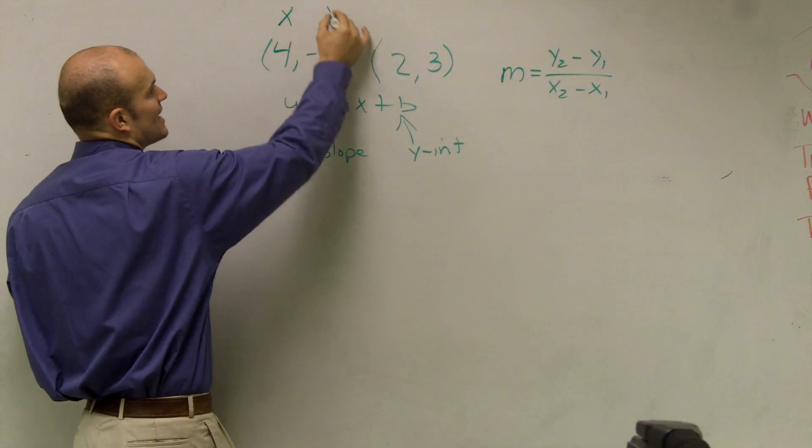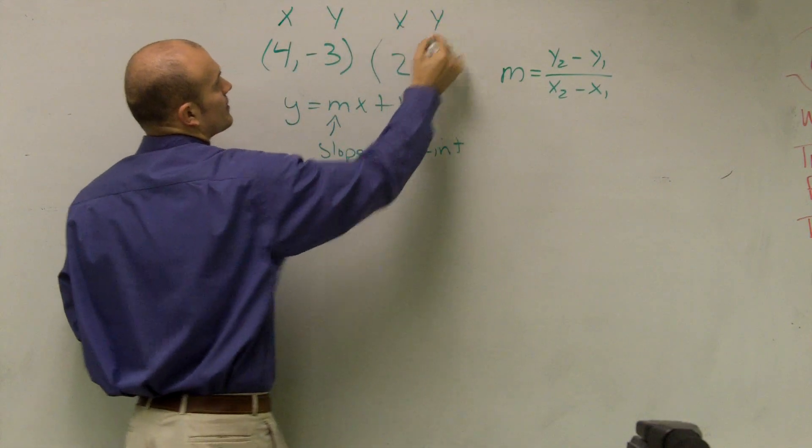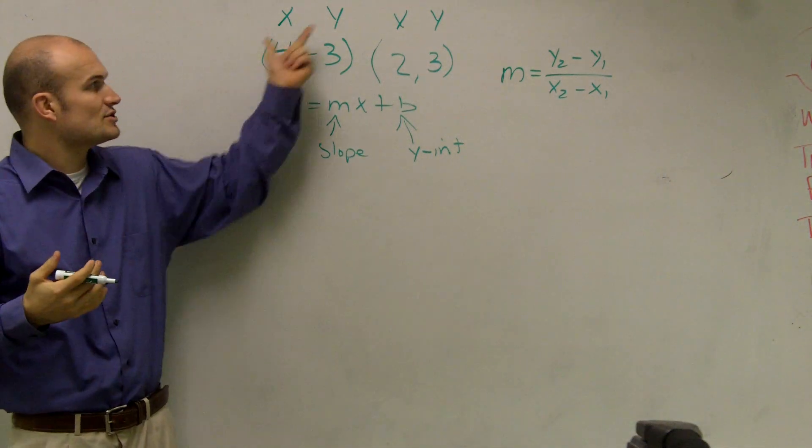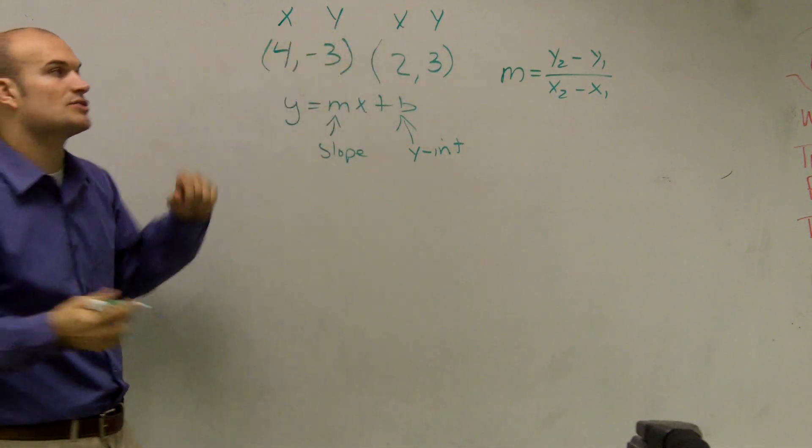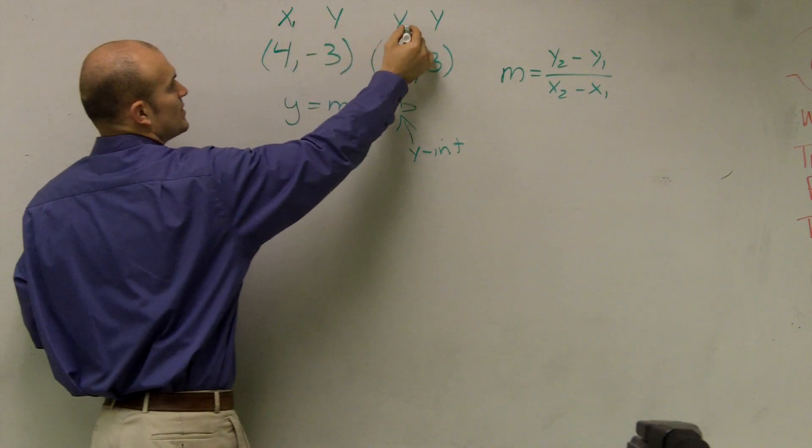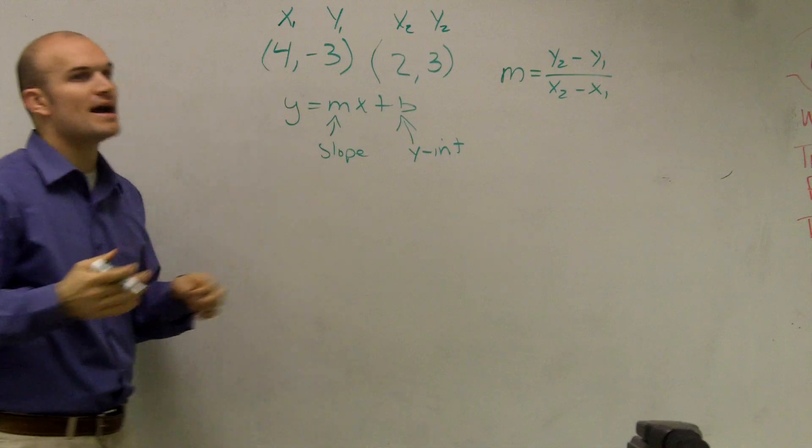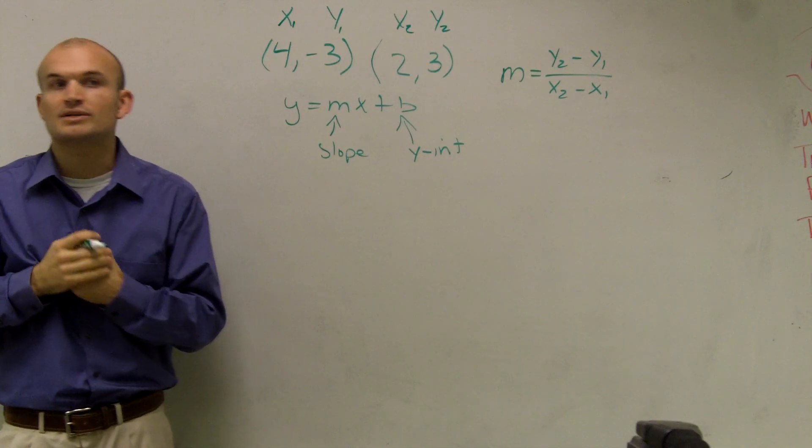Remember, every point has an x and y coordinate. We need to distinguish between our x's and y's. So I'll label this one 1 and this one 2. It doesn't matter which one you label 1 and 2.